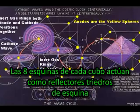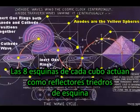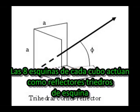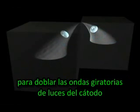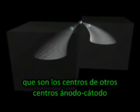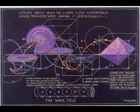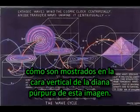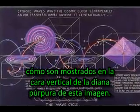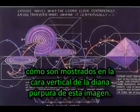The eight corners of each cube act as trihedral corner reflectors to bend spiraling cathode wave lights inward towards apices, which are the centers of other anode-cathode centers as seen in the vertical purple bullseye face in this image.